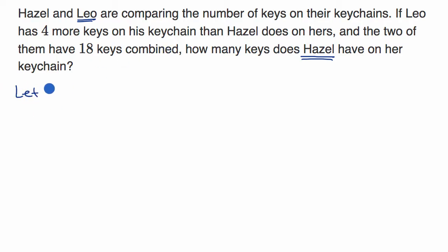Let L equal the number of keys for Leo, and H equal the number of keys for Hazel. Obviously if you were doing this on a test like the SAT, you wouldn't have to write all of this out. You'd be trying to get to the solution, but I'm explaining it for you.